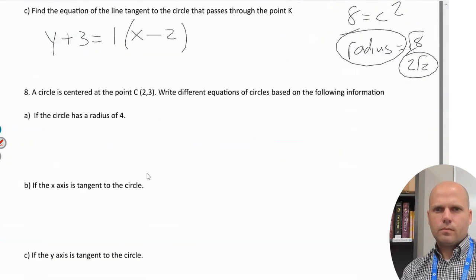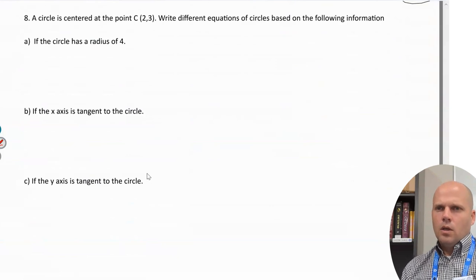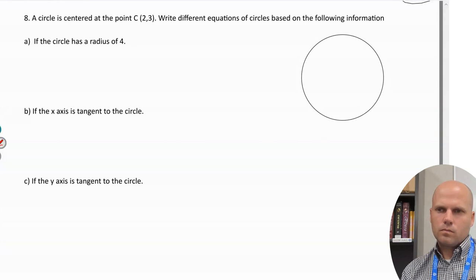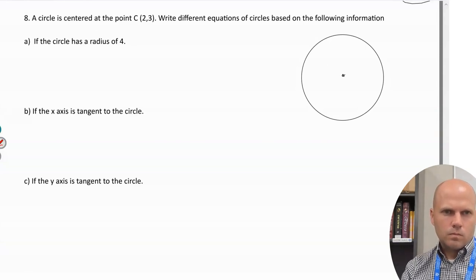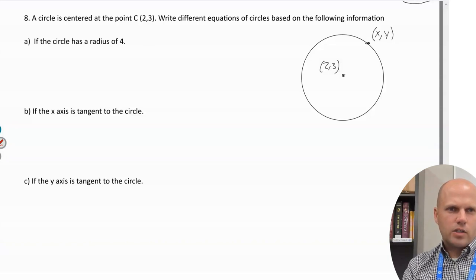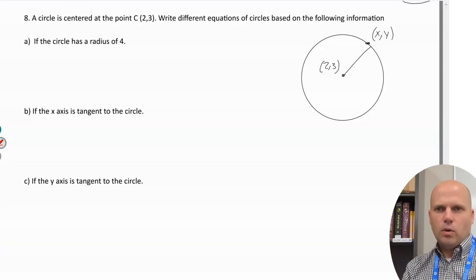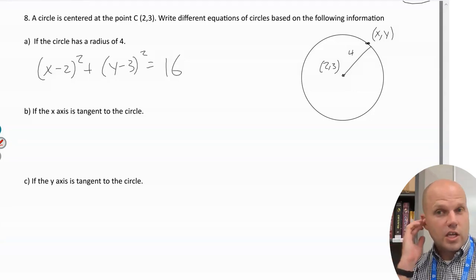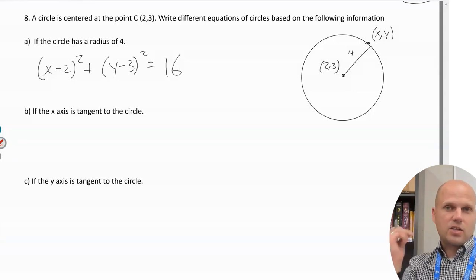The circle is centered at (2,3). It contains all (x,y) points with a very specific distance from (2,3). If the radius is 4, the equation is straightforward: (x-2)² + (y-3)² = 4² = 16. The x-distance squared plus y-distance squared equals the radius squared.